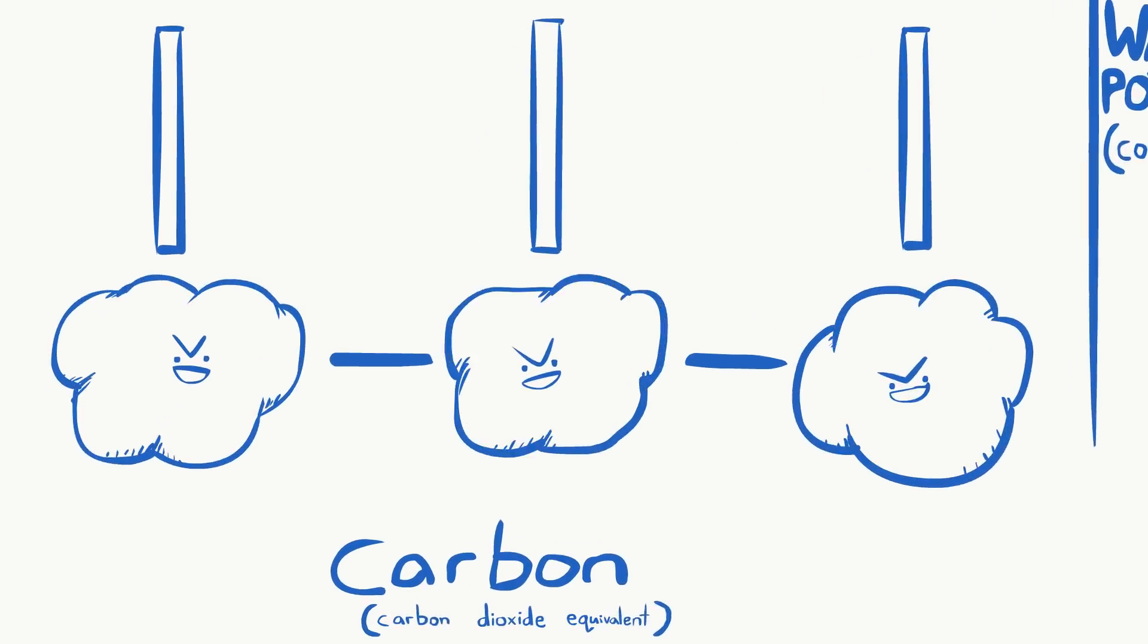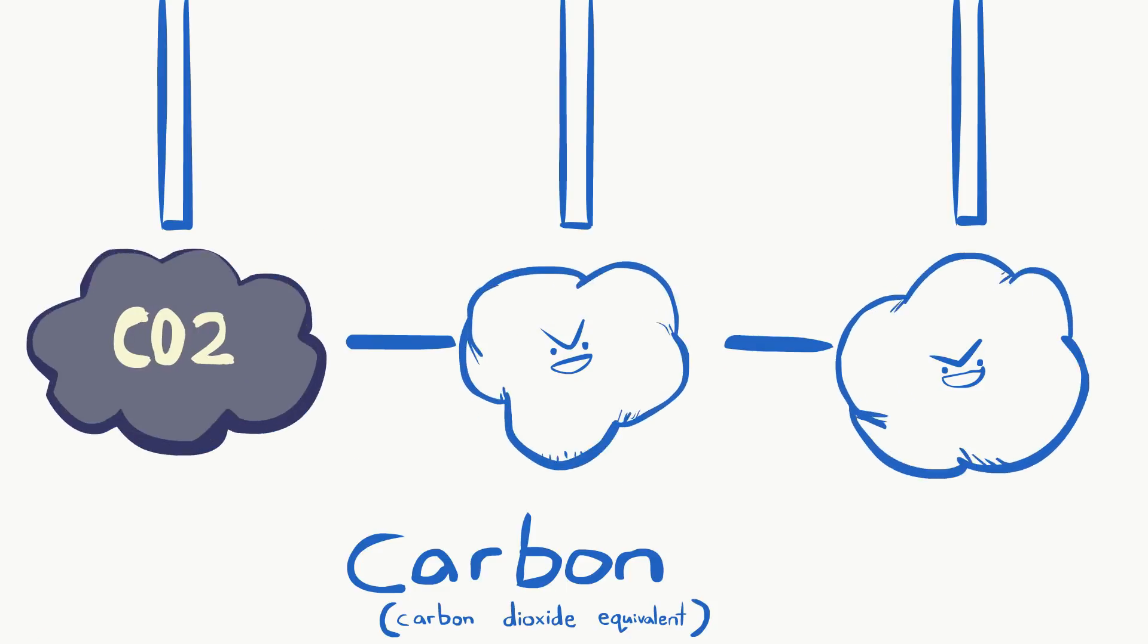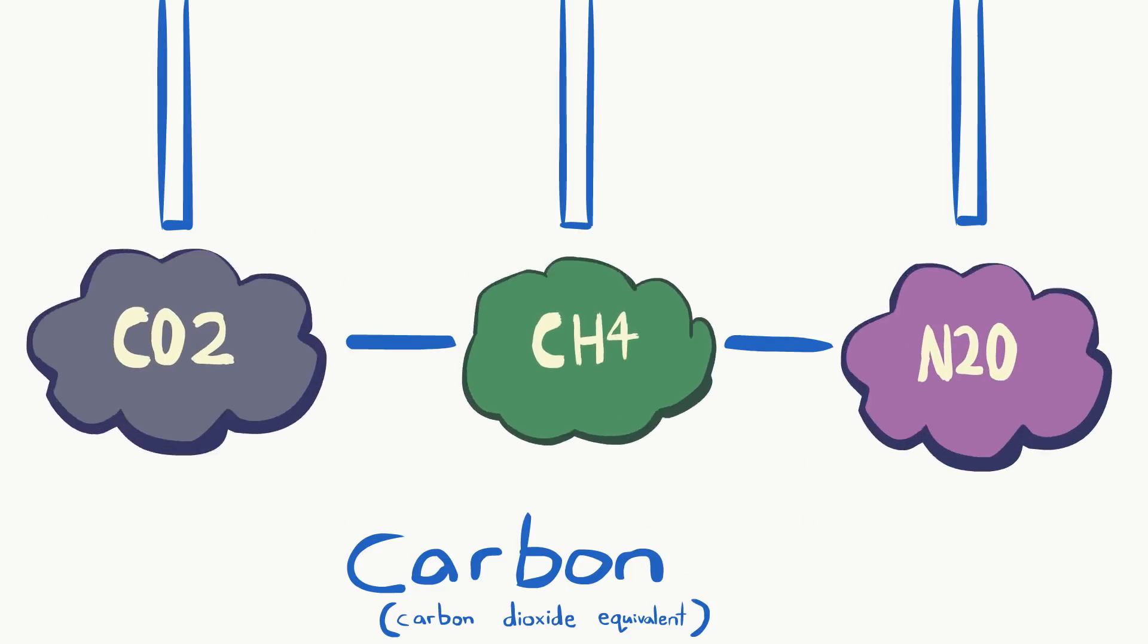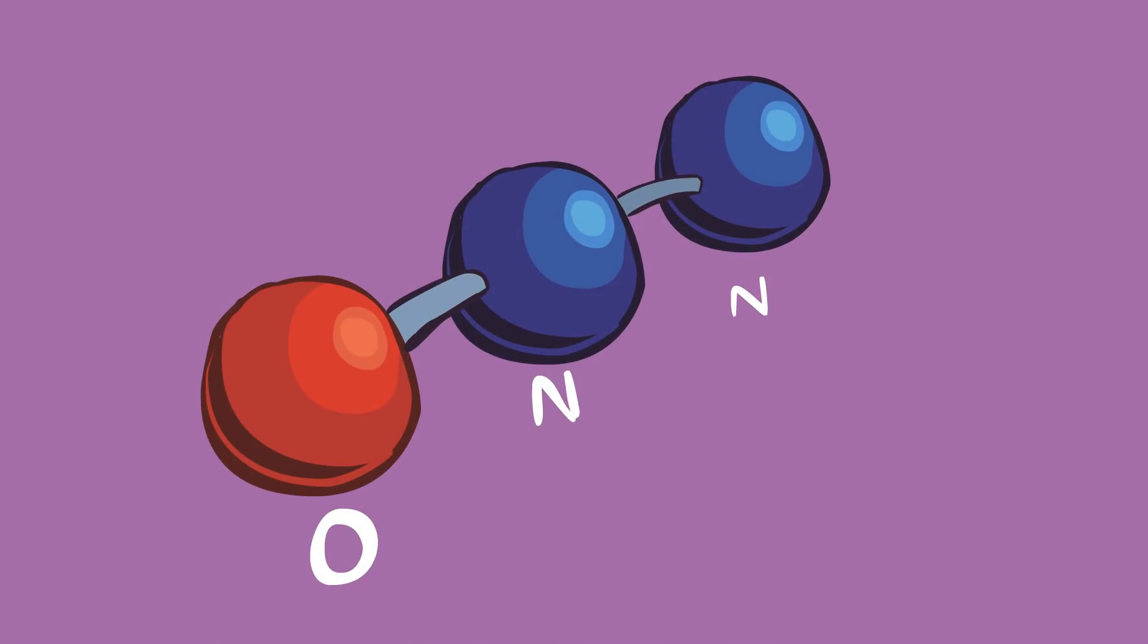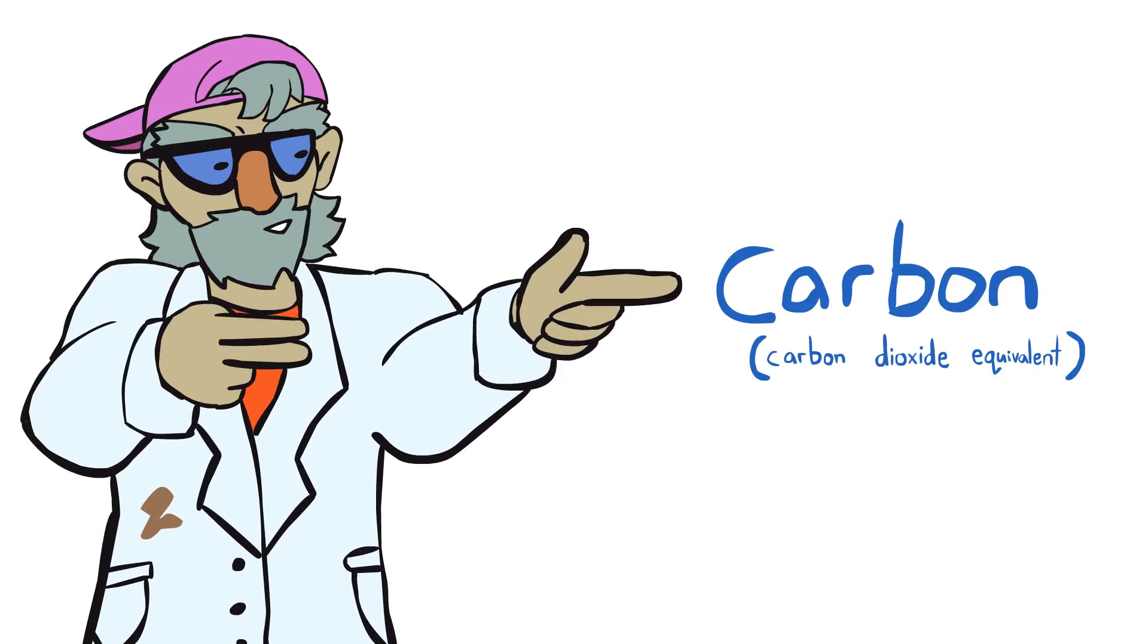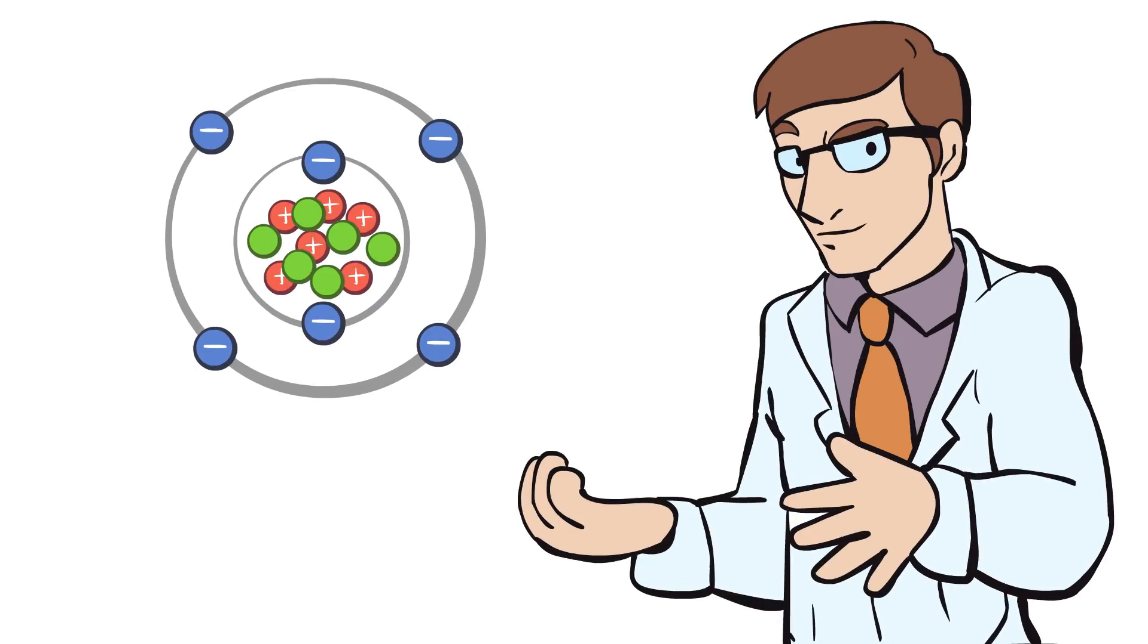All the greenhouse gases are compared to each other and quantified in terms of their global warming potential compared to carbon dioxide. The three main greenhouse gases are CO2, methane, and nitrous oxide, which also comes from livestock. Which, as you can see, does not have any carbon atoms in it at all, and demonstrates that the carbon climate scientists refer to has nothing to do with the real carbon atom that real scientists refer to.